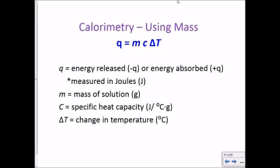Using mass: the Q = mcΔT — you've heard of this, we've done this before. Q is the energy released or absorbed, measured in joules. M is always the mass. C here is the specific heat capacity in joules per gram per degree Celsius. Delta T is the temperature change, which is the final minus the initial — T_final minus T_initial.